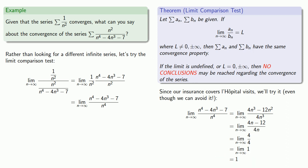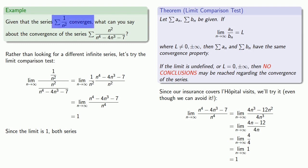Since the limit is 1, it's not 0, not plus or minus infinity, and not undefined. Since the limit is 1, both series do the same thing. And since we know 1 over n squared converges, we know that both series converge.